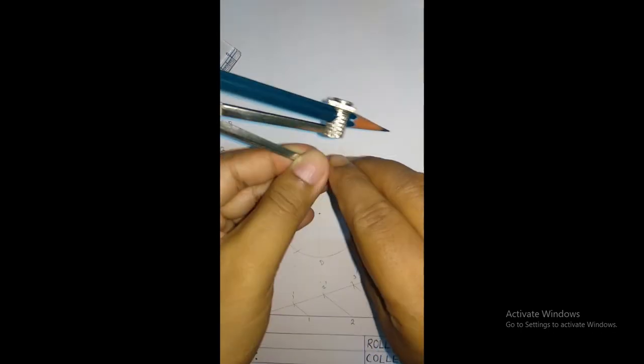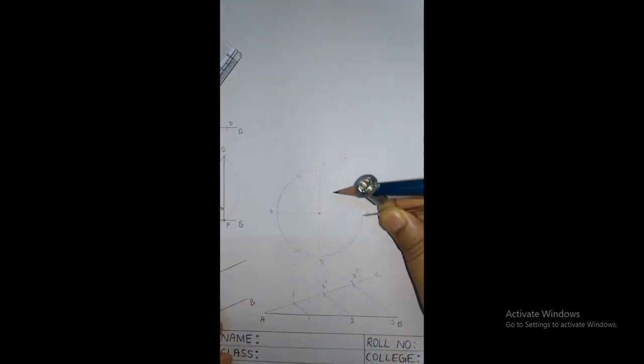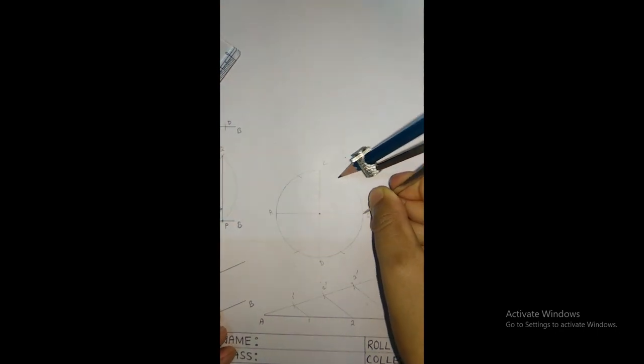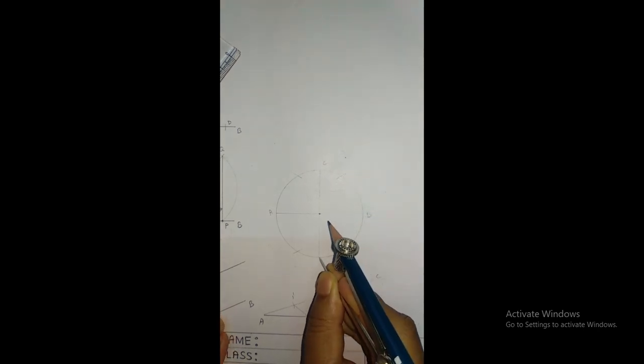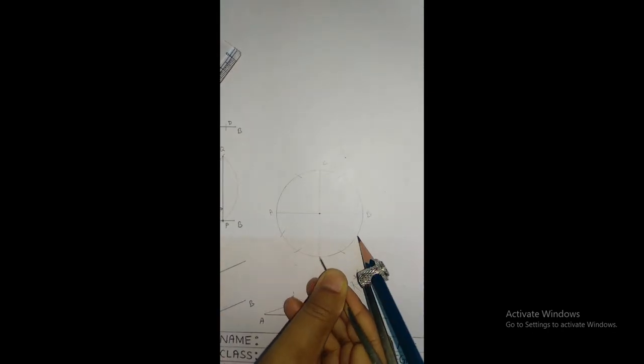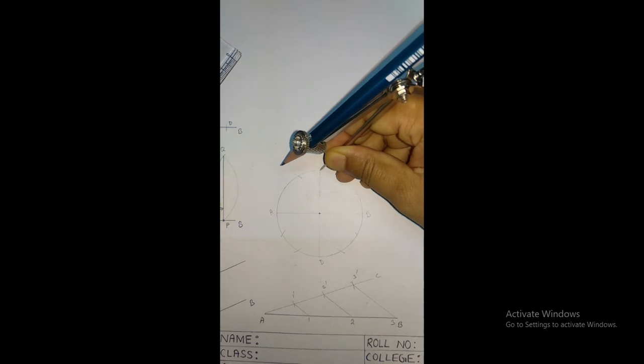Similarly, you have to draw an arc with center at B, here and here. Similar thing you have to do by taking radius, this one, and by taking radius C.